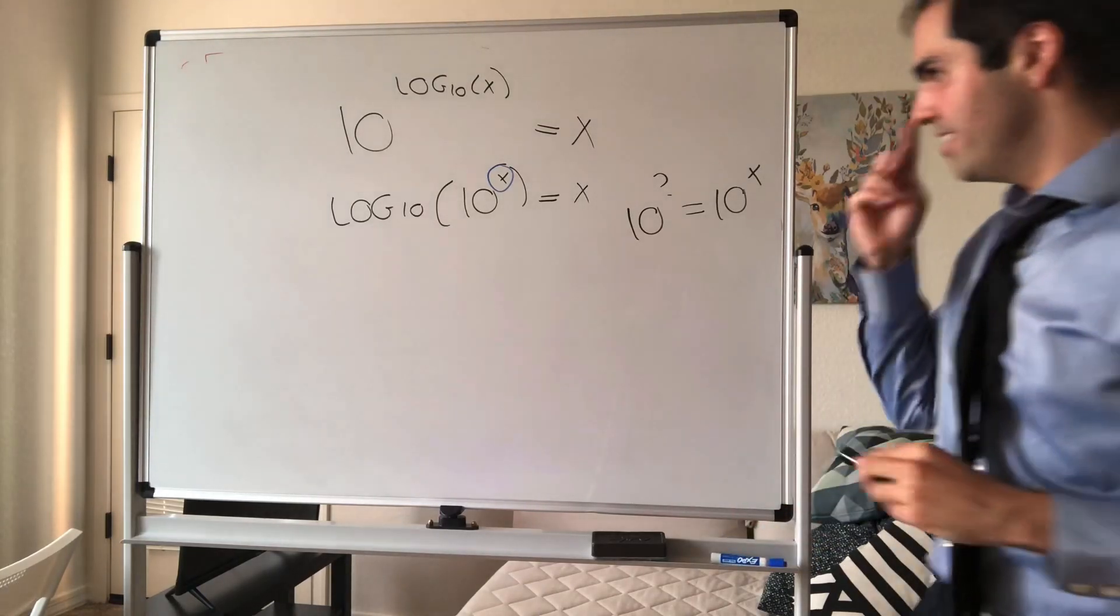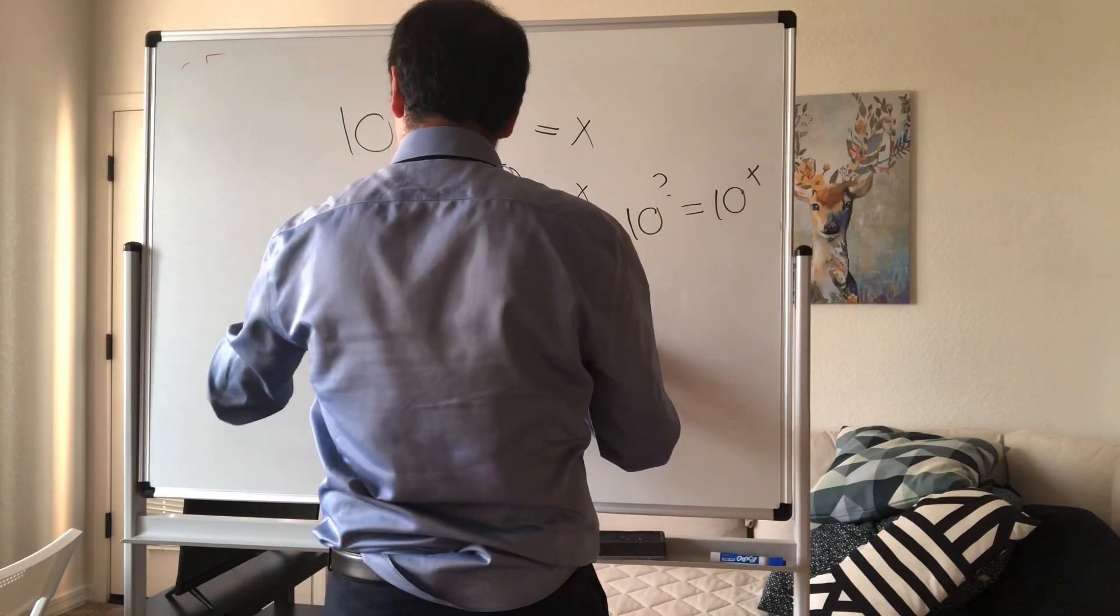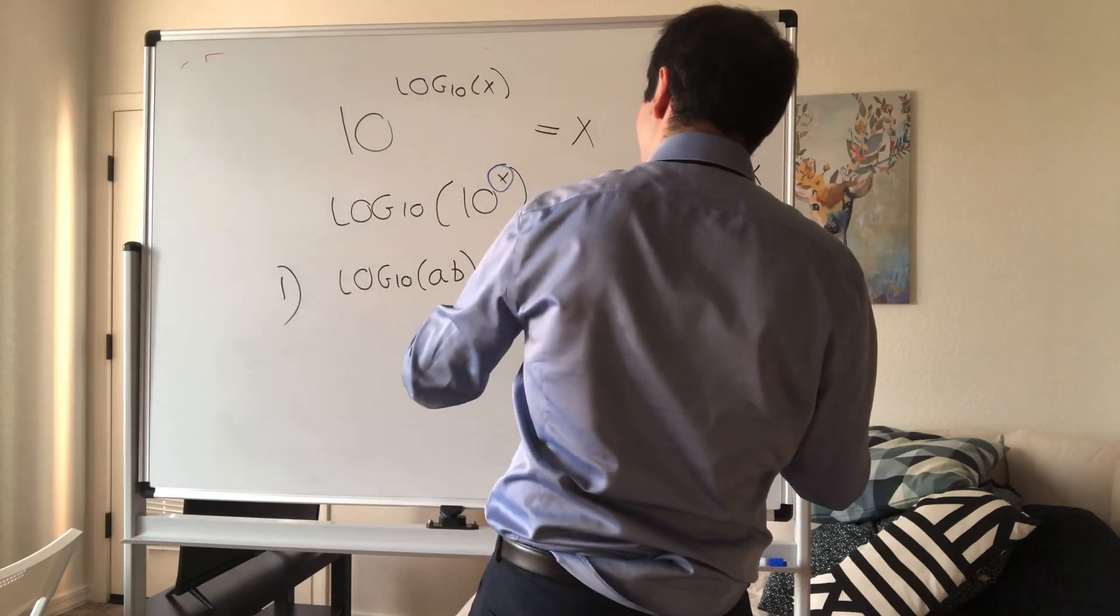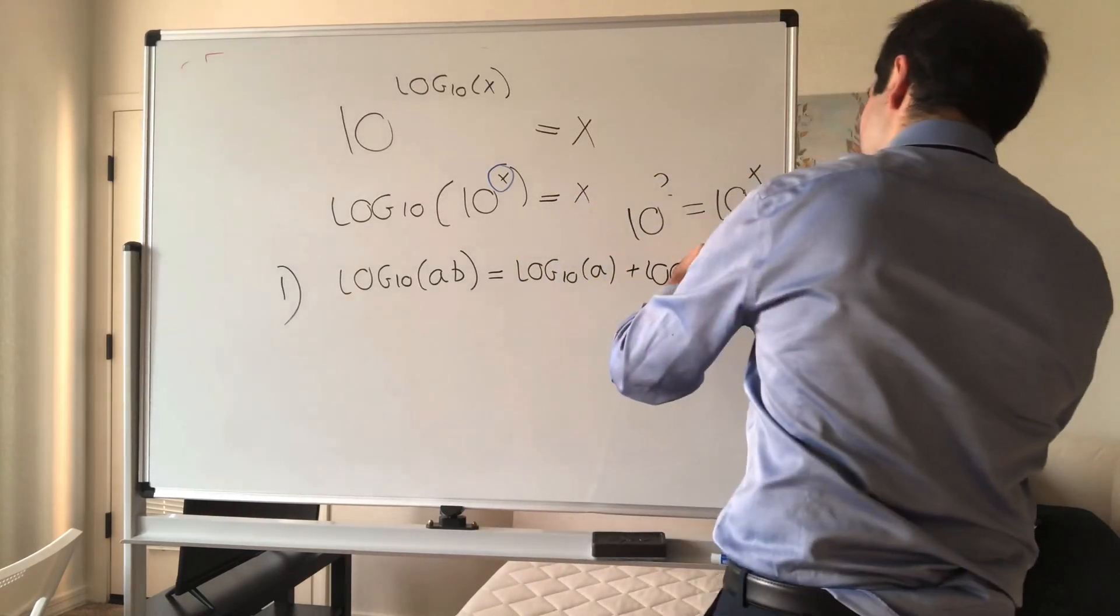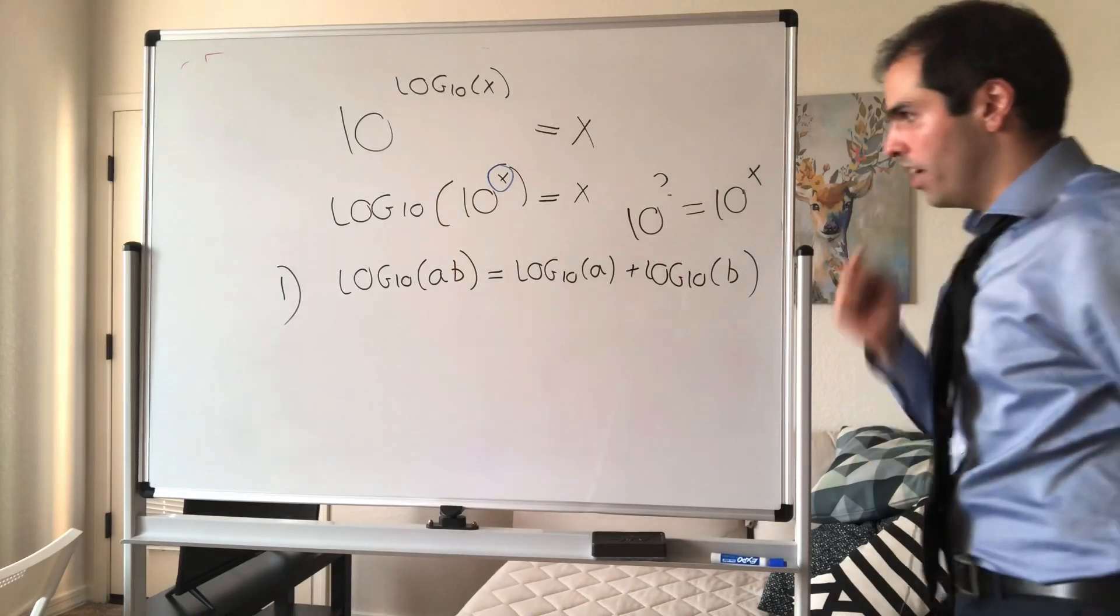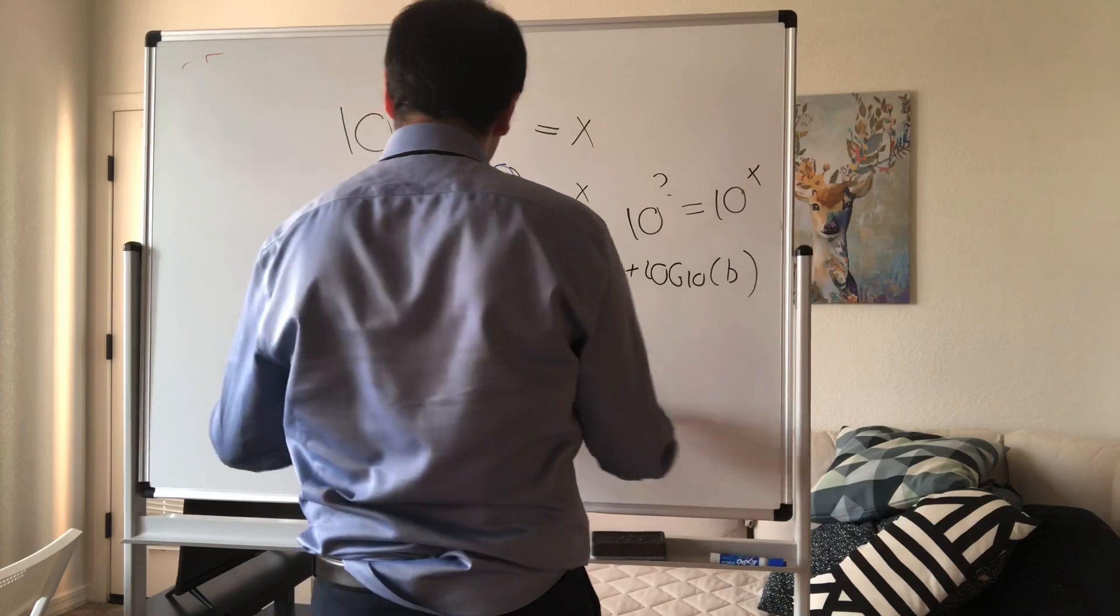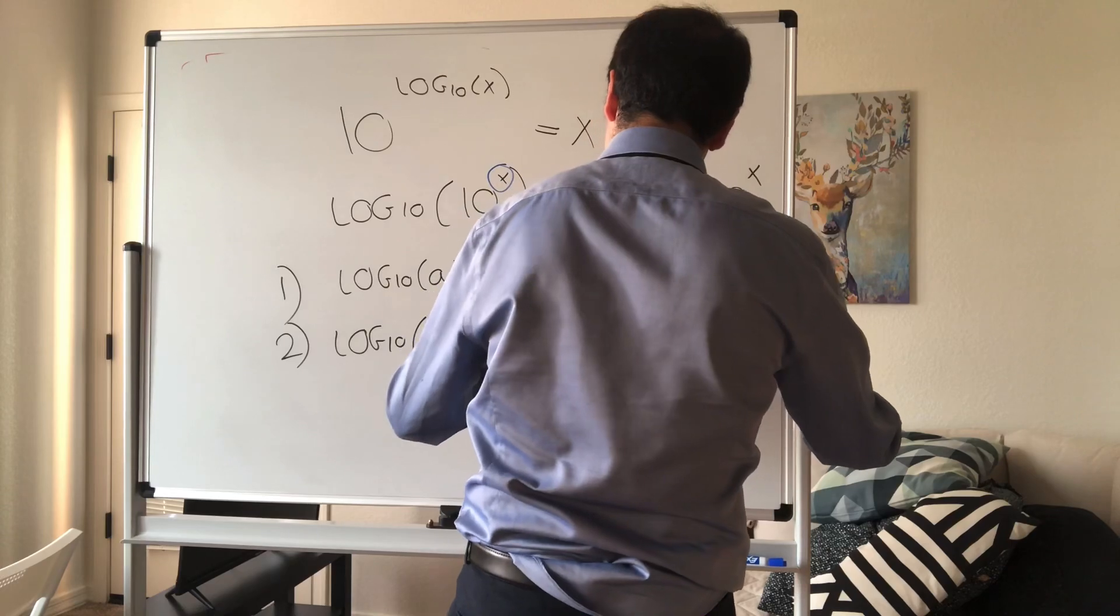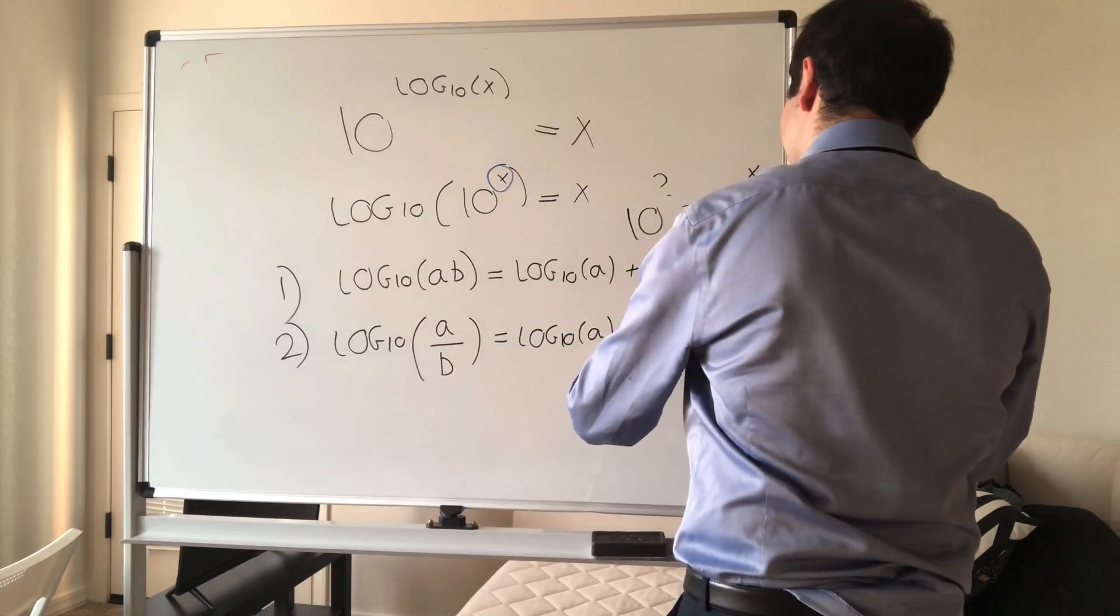And then another couple of really nice laws are the following. Log base 10 of AB is just log base 10 of A plus log base 10 of B. So log splits up products. And similarly with fractions, log base 10 of A over B is log base 10 of A minus log base 10 of B.